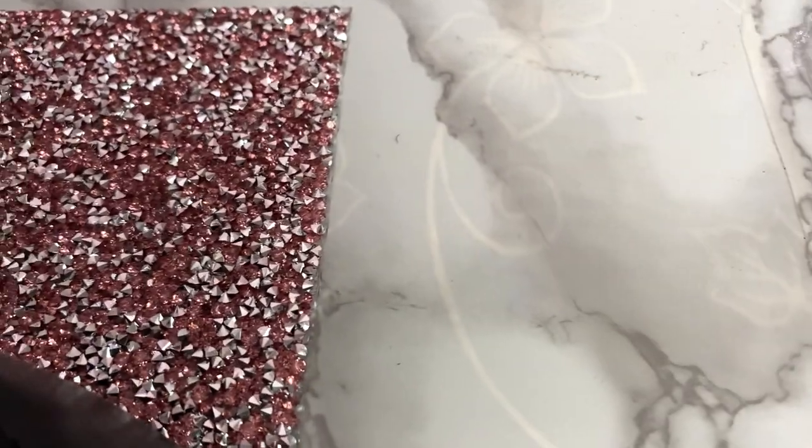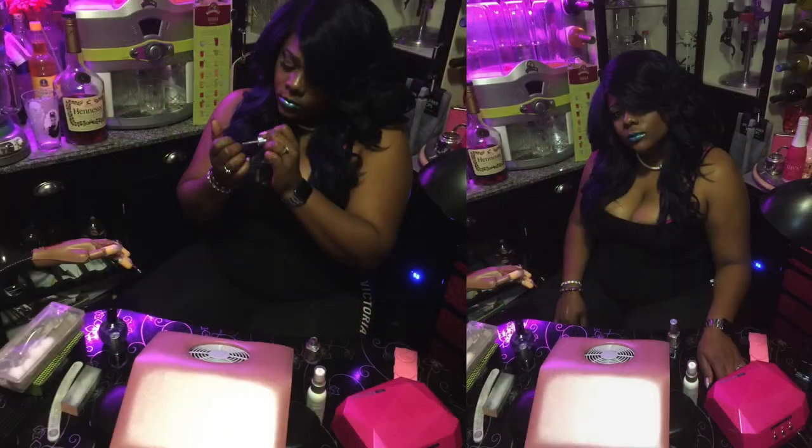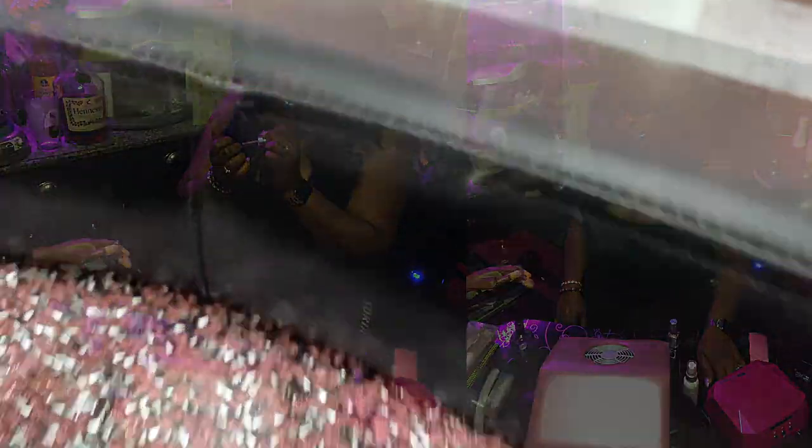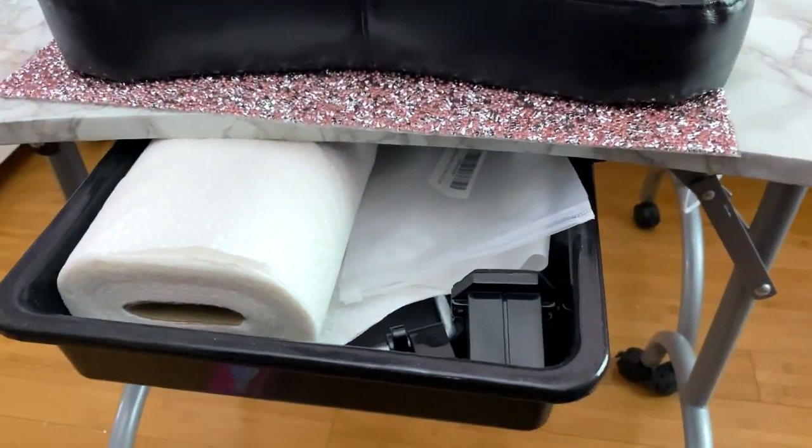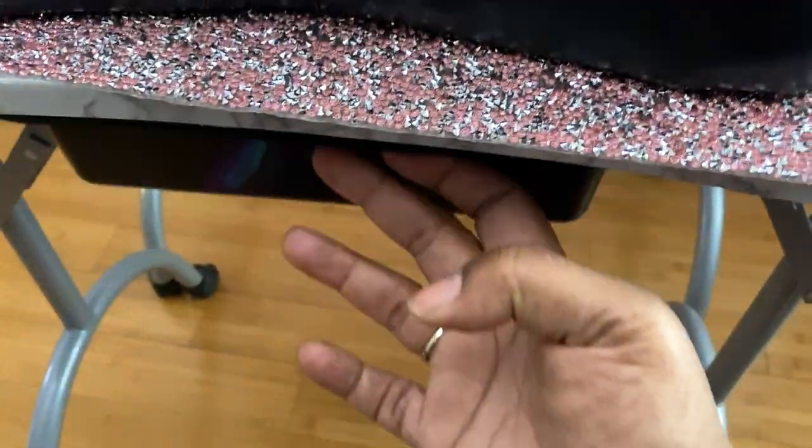Now this table used to be black—I don't know if you can see that peeking through. I did go ahead and put marble on it. The other feature of this table is the nail drawer. Because you have the dust collector on this table, you don't get the nail drawer.